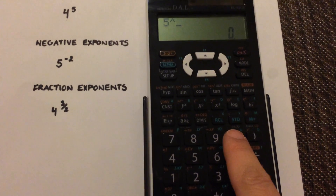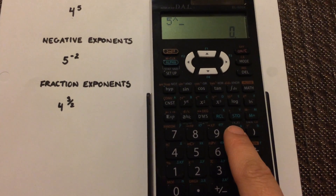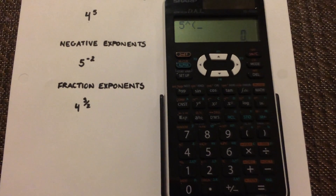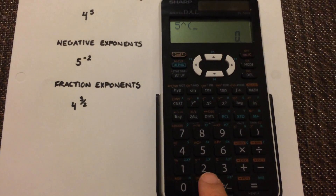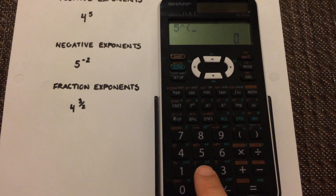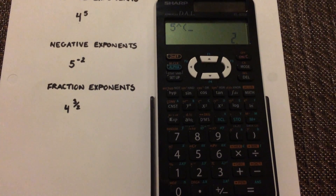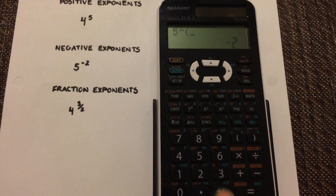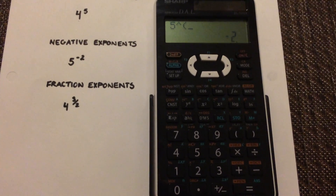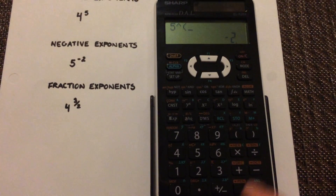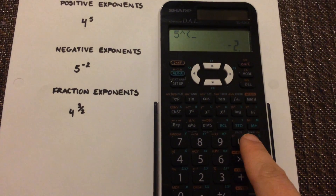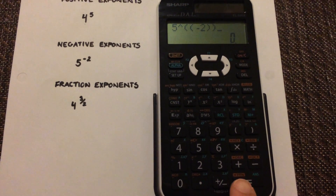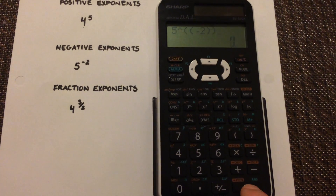In brackets, I'm going to select negative 2. So you're going to have 2, and then this function here — plus or minus — is your negative, so you're going to put a negative in front of it. Close the bracket and hit equals.